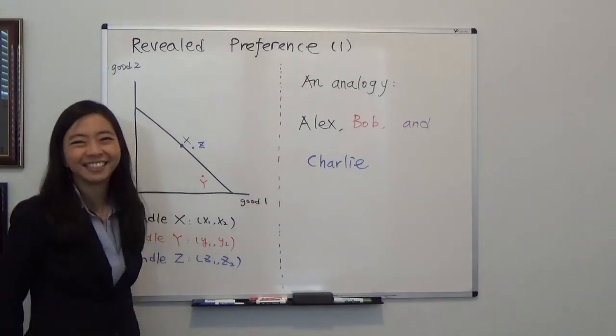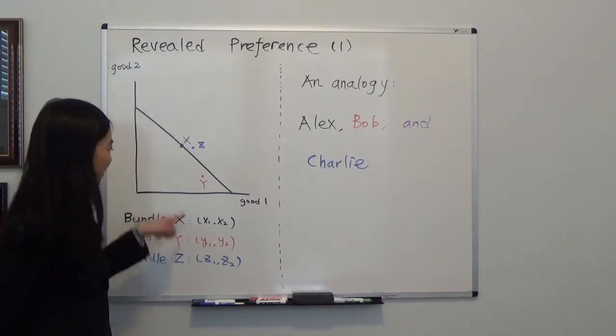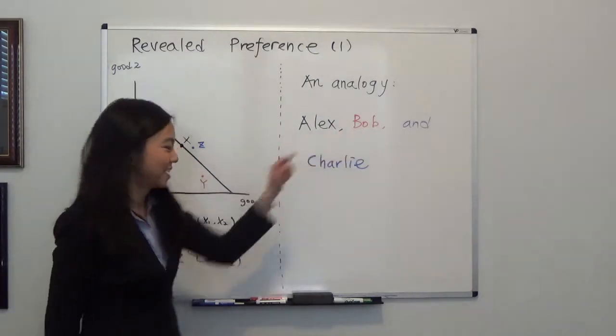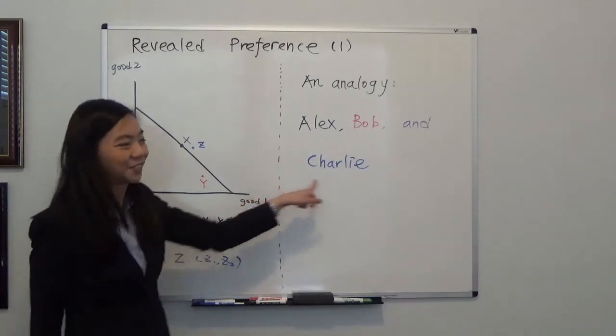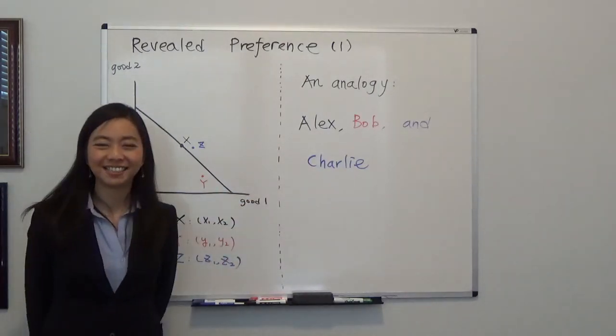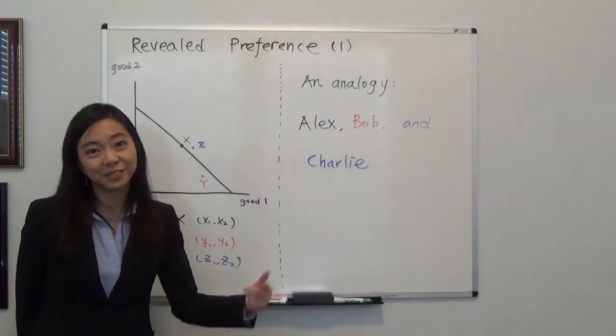So you can see our bundle X is like Alex, bundle Y is like Bob, and bundle Z is like Charlie. That's what revealed preference means. I hope this helps. I'll see you next time.